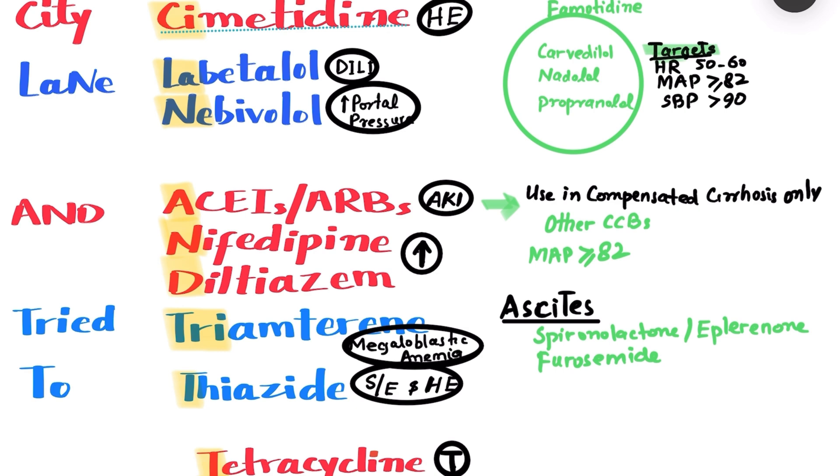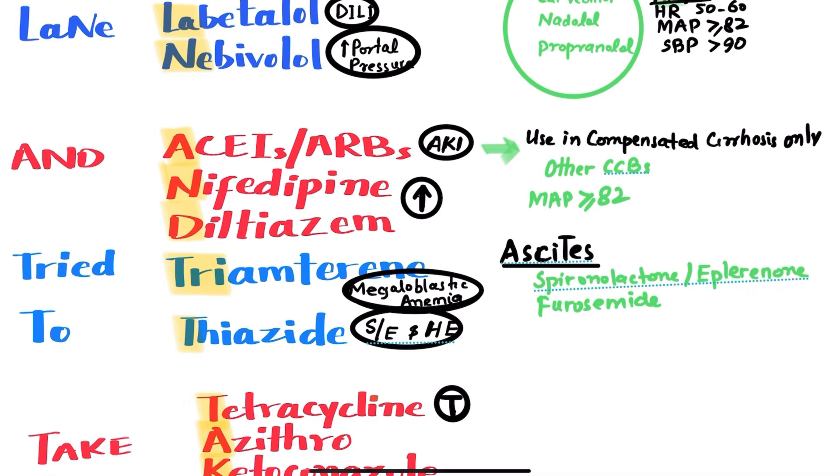Diuretics are commonly used in cirrhotic patients for the treatment of ascites. The potassium-sparing diuretics that we can use are spironolactone and eplerenone. And the loop diuretic that we can use is furosemide. We typically use spironolactone in combination with furosemide with common dosing ratio of 100 mg of spironolactone to 40 mg of furosemide. However, this can be adjusted based on the side effects of the medication and the electrolyte levels like potassium and sodium levels.